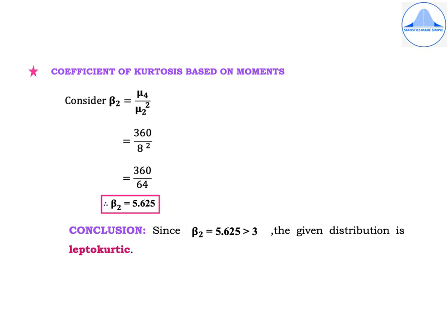Now we compute the coefficient of kurtosis based on moments. β2 = μ4 / μ2² = 360 / 8² = 360 / 64 = 5.625. Since β2 = 5.625 > 3, the given distribution is leptocurtic.